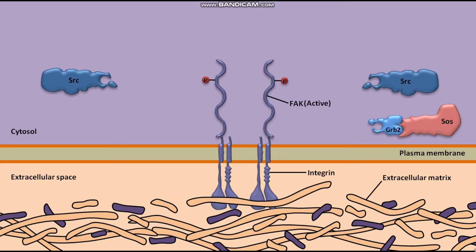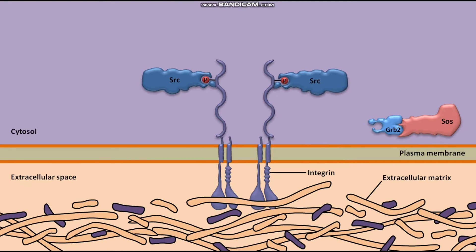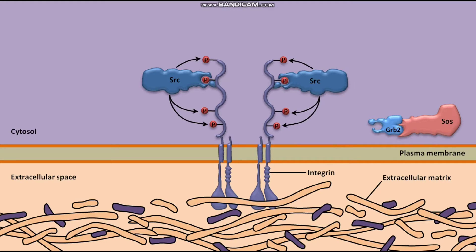SRC then binds to the FAK autophosphorylation site and phosphorylates FAK on additional tyrosine residues. The FAK phosphotyrosines act as binding sites for a variety of downstream signaling molecules.